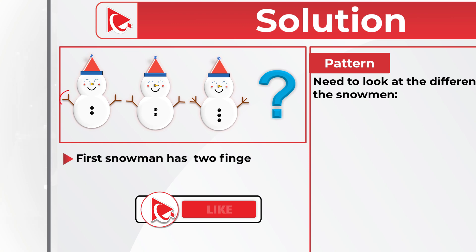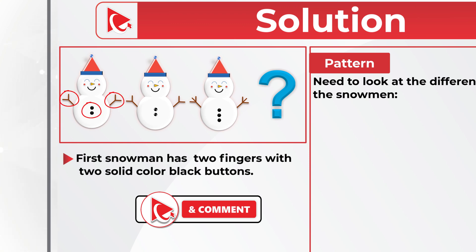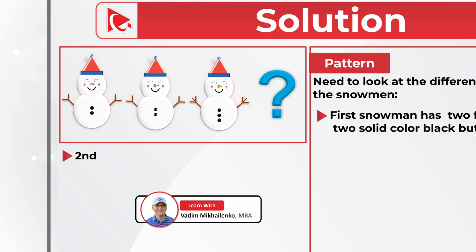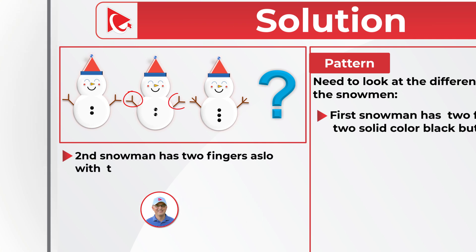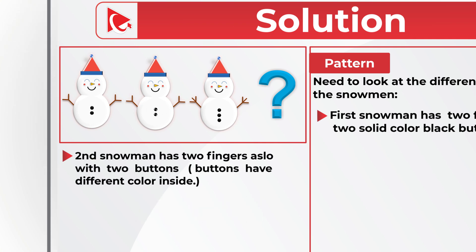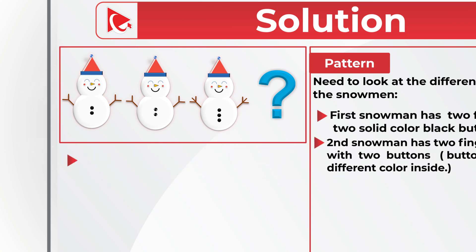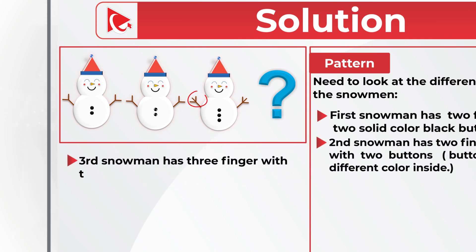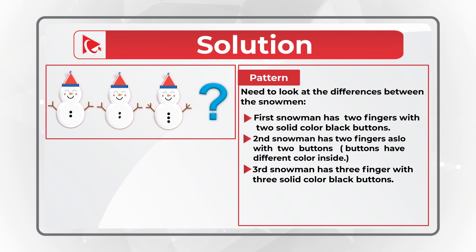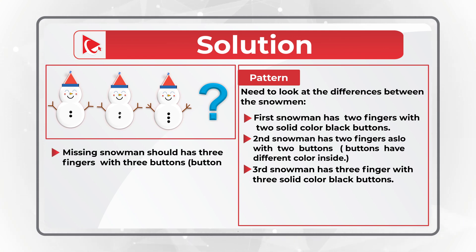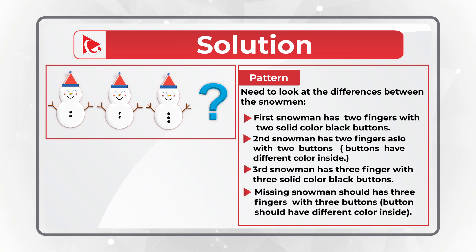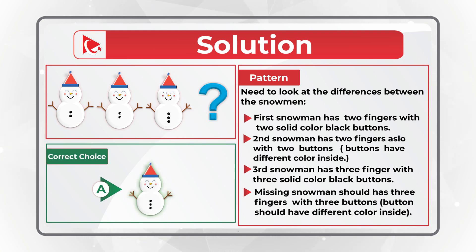The first snowman has two fingers with two solid black buttons. The second snowman has two fingers as well with two buttons, but the buttons now have a different color inside. The third snowman has three fingers with three solid black buttons. So the missing snowman should have three fingers with three buttons that have a different color inside. The correct choice is choice A.